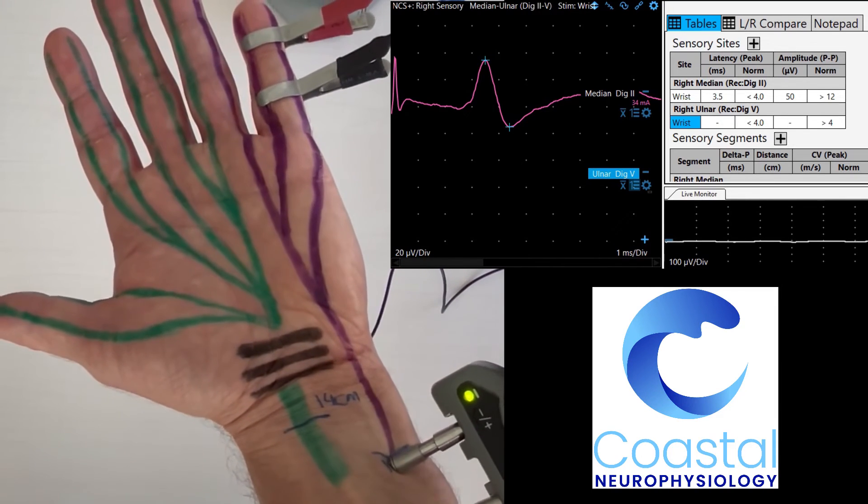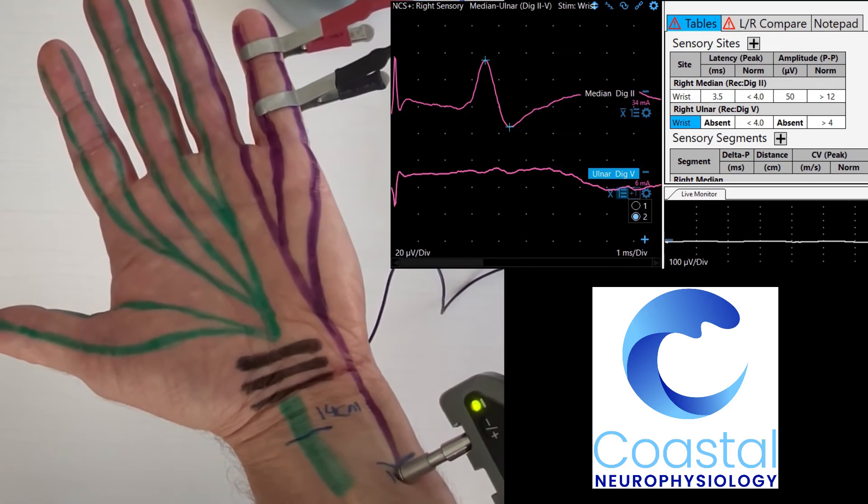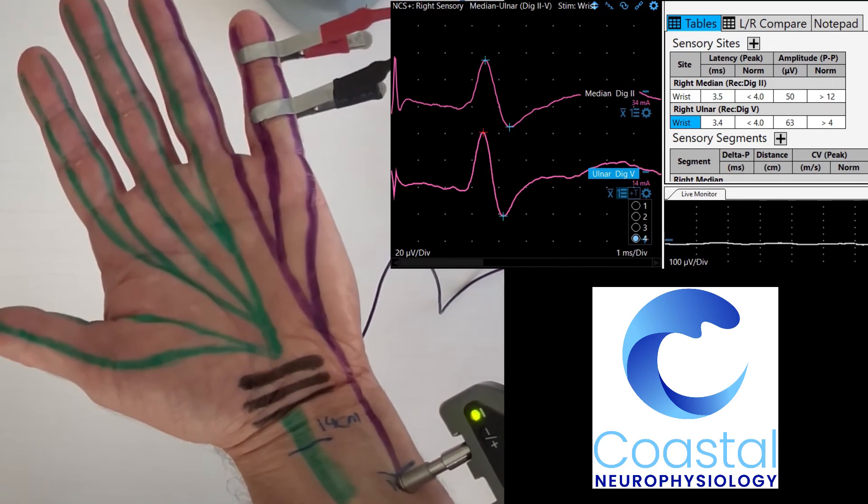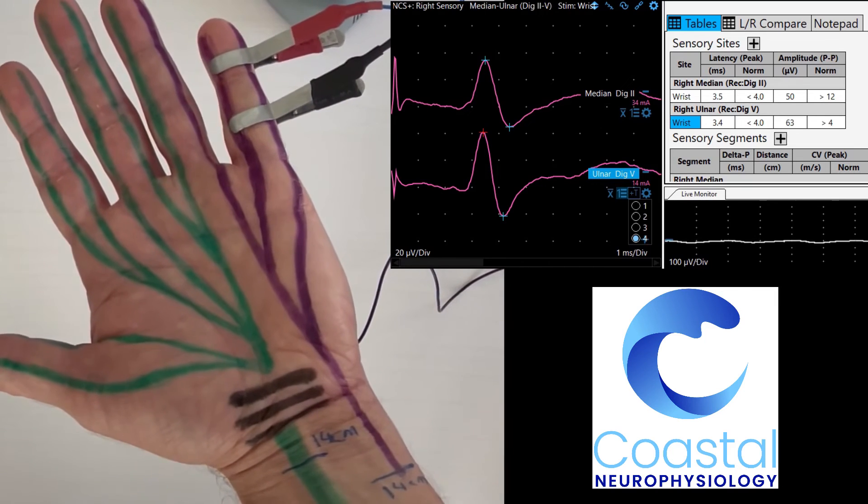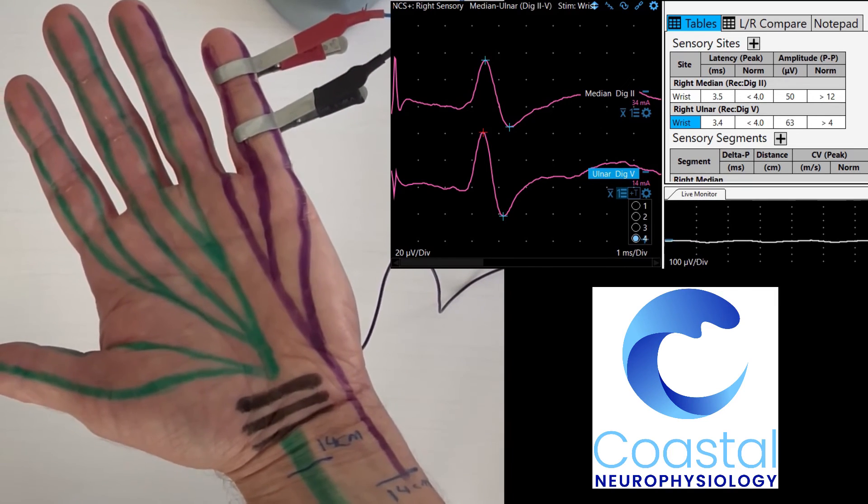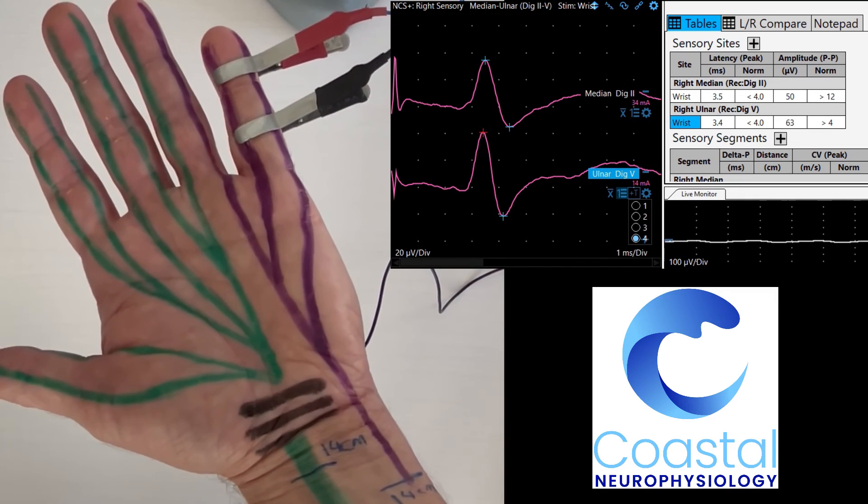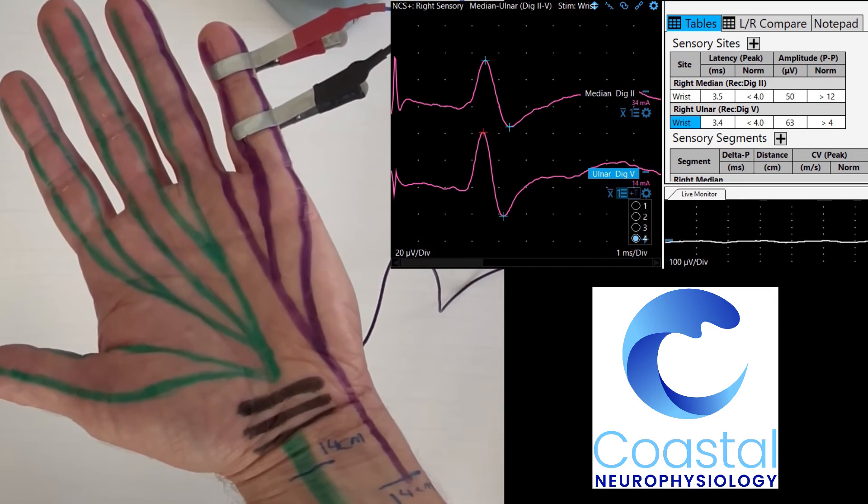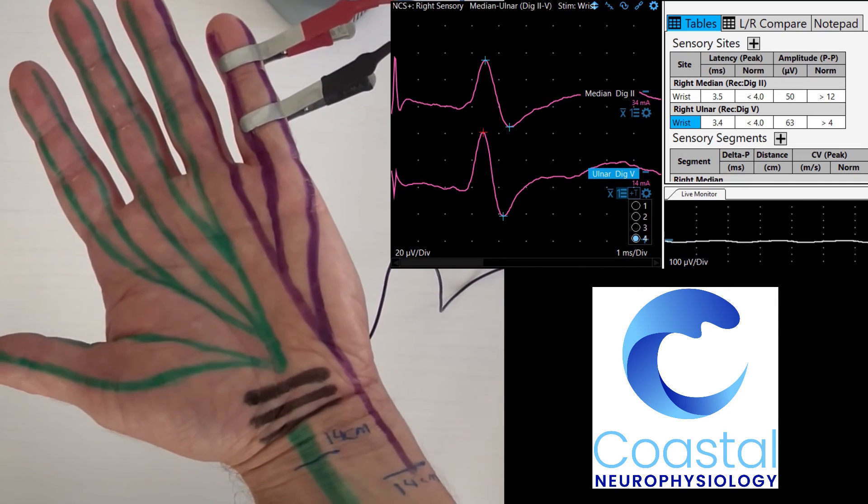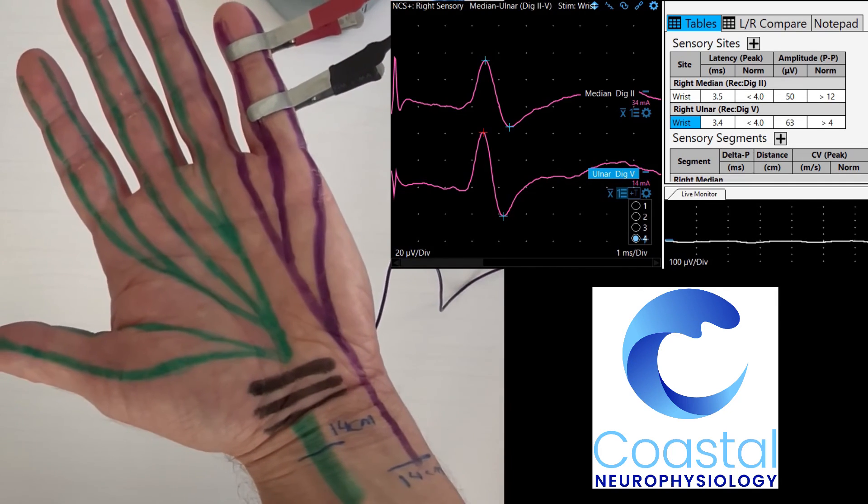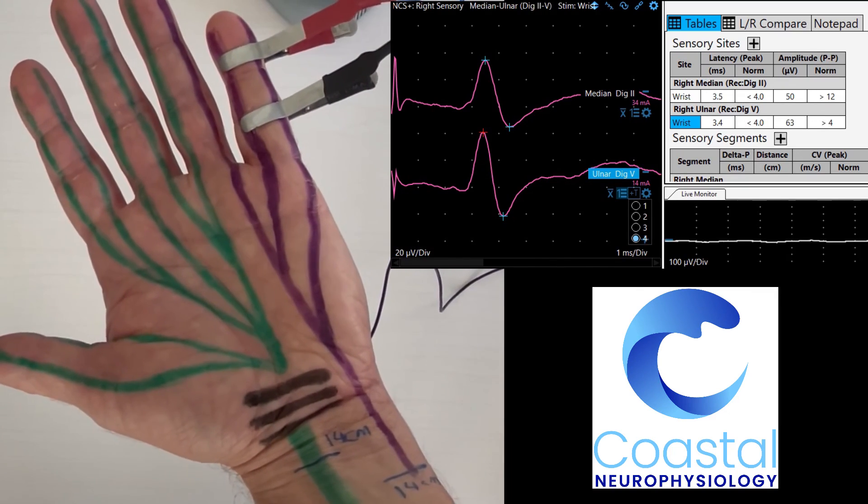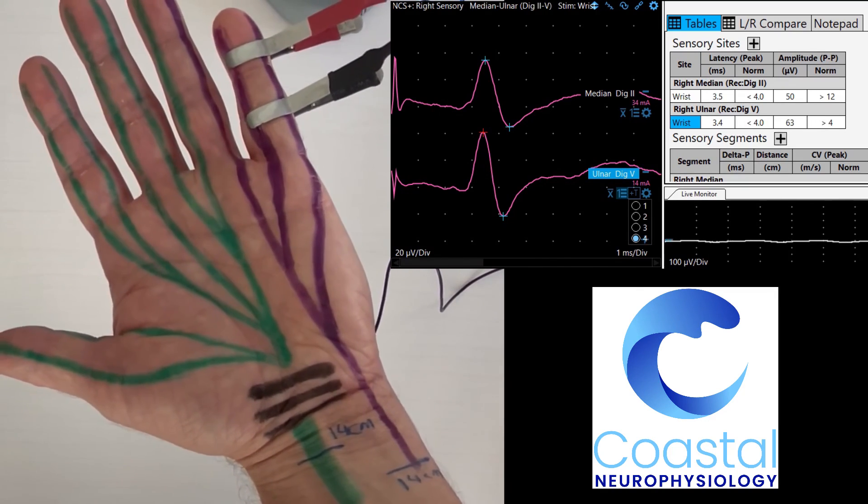If I stimulate the ulnar nerve electrically at the wrist and as I increase my signal you will see an action potential occur. You can see the ulnar nerve signal on the screen is very similar in shape, very similar in size and very similar in latency to the median nerve. These two nerves are essentially the same in terms of how they're conducting even though the median nerve conducts through the carpal tunnel and the ulnar nerve does not. In this setting this person does not have carpal tunnel delay.